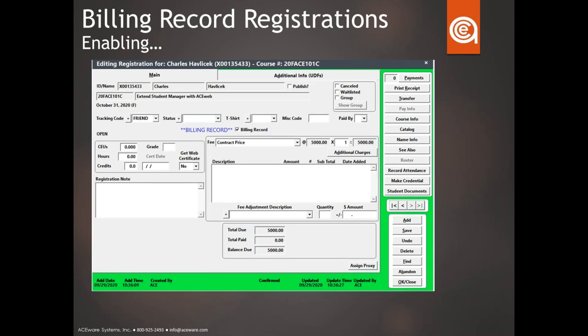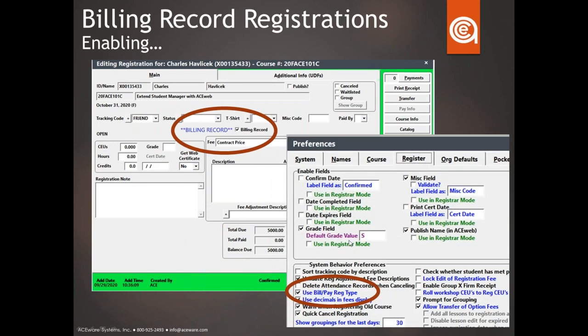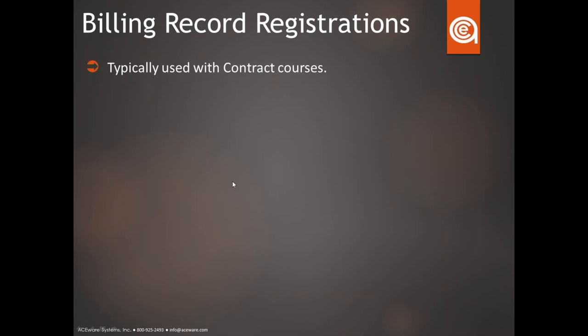Another option is the billing-only registration, or billing record. When you turn on the preference under registrations called 'use bill pay registration type,' a billing record checkbox appears on the registration screen. When you check it, it pops up a message: 'billing record.' You'd typically use this for a contract course where one person at a company is getting the invoice but is not an actual attendee — you need their name connected to the course to generate an invoice for them.